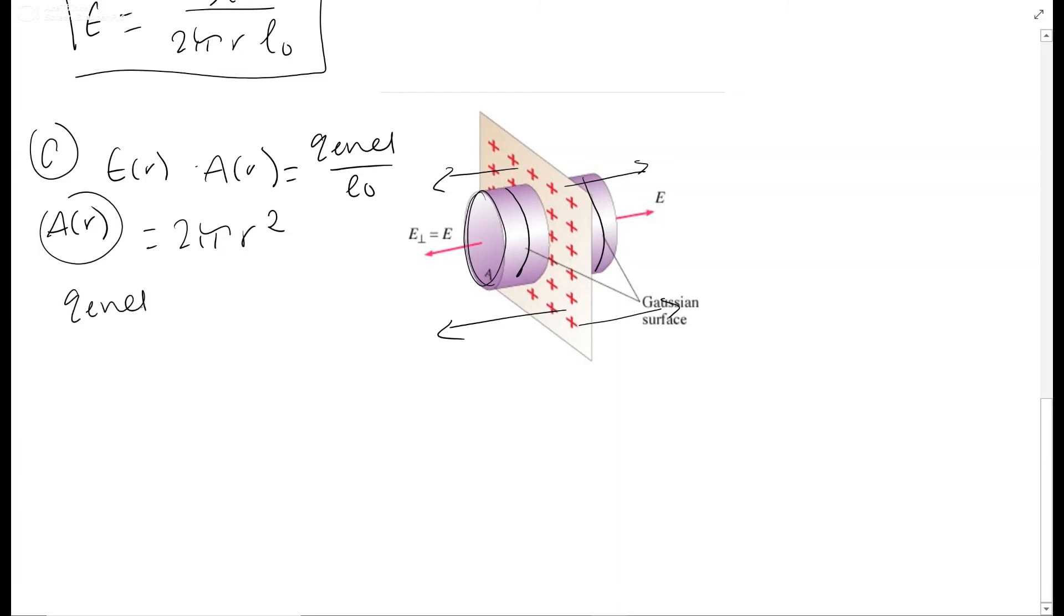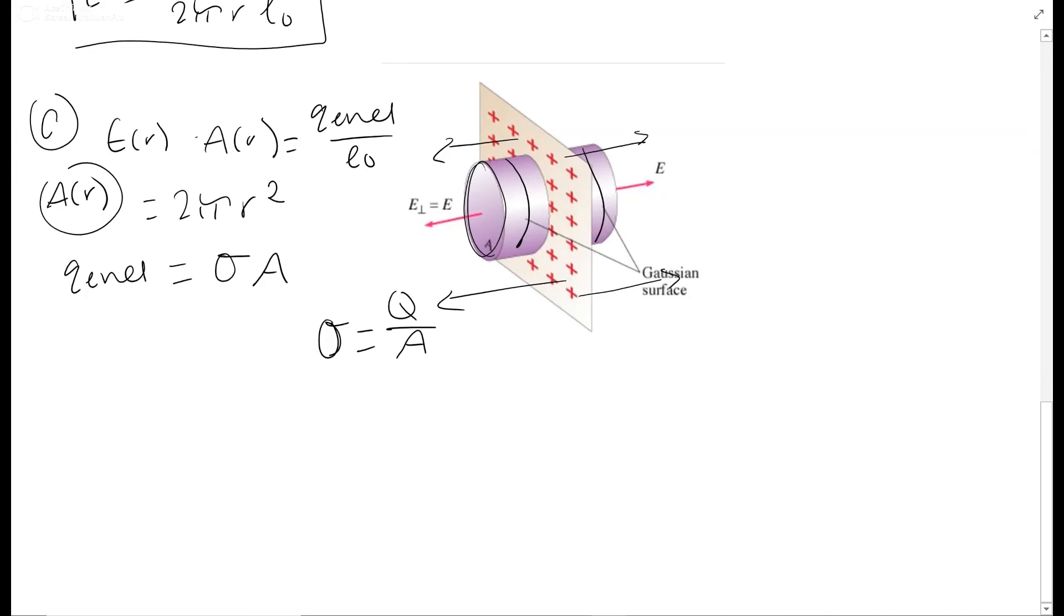So Q enclosed this time is equal to omega A because that's the density it gave us. Instead of lambda we have omega. And this is just from the equation omega equals Q over A. Which Q for us is charge. But you can rearrange this to get Q equals omega A.